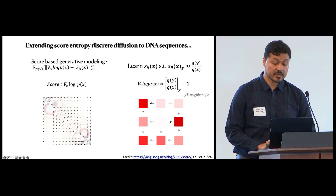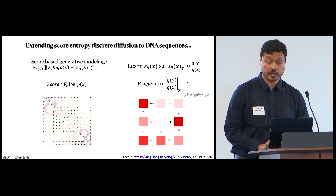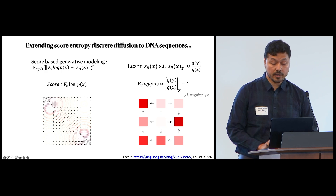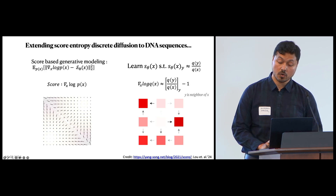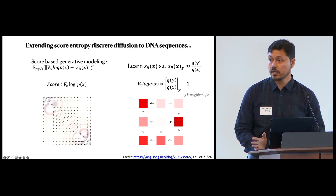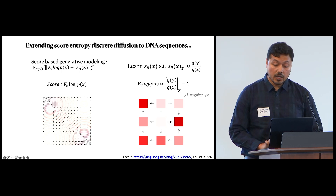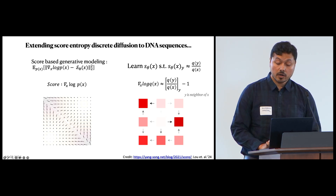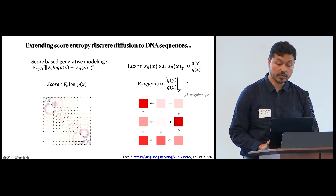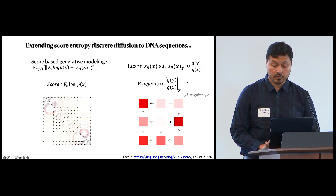Recently, score matching has been extended to discrete data by using concrete score. For a data point X in discrete space and another neighboring point Y, the density ratios Q(Y) over Q(X) are collectively known as the concrete score, which can directly be modeled by a neural network, again named S-theta. This has been shown to work well for text data, and so we thought it would be suitable to explore for DNA sequences. I'm going to skip over the technical details, but you can find me to chat about them throughout the conference if you are interested.